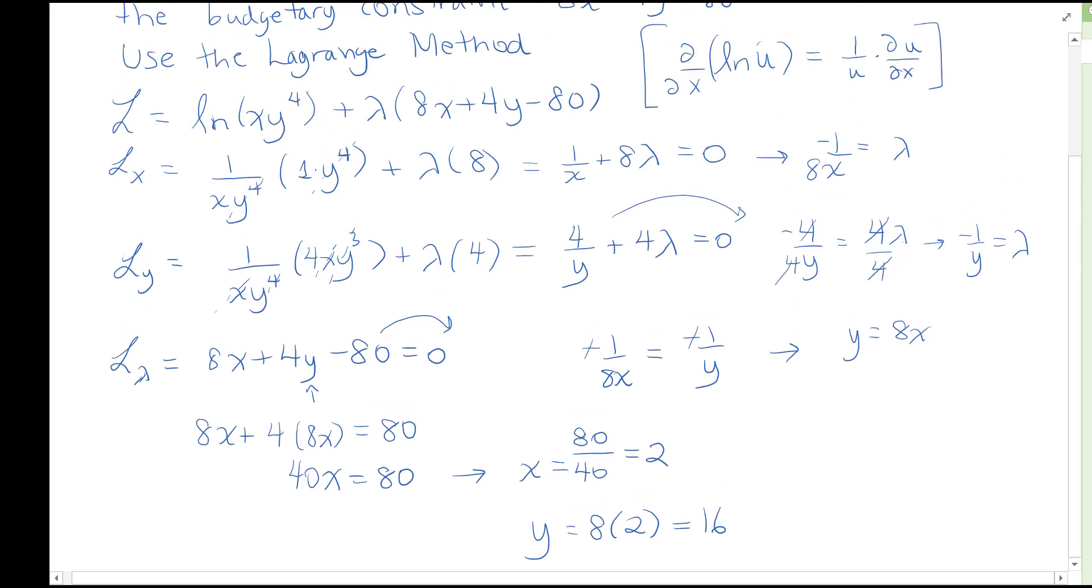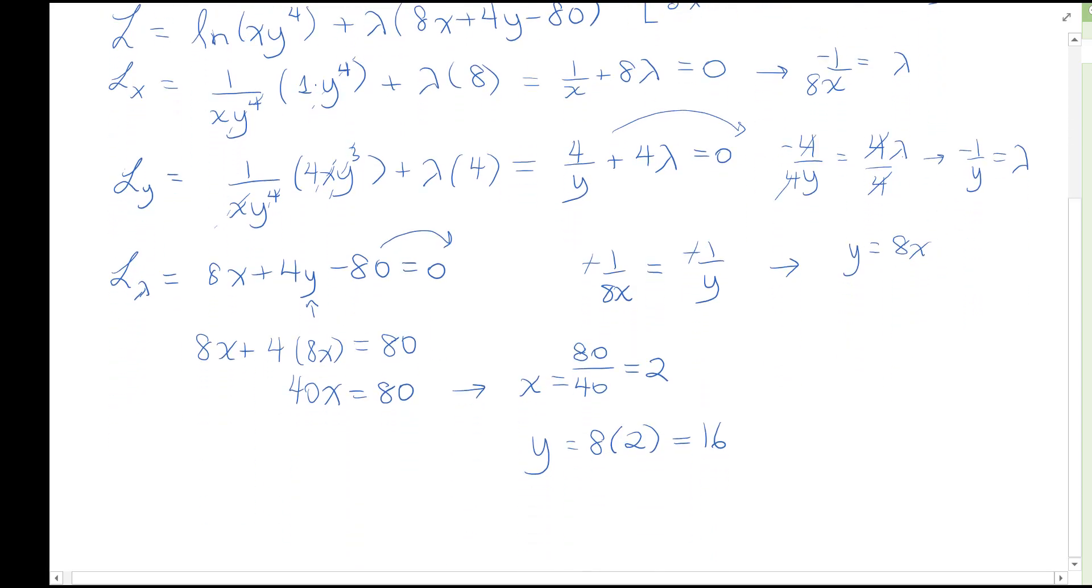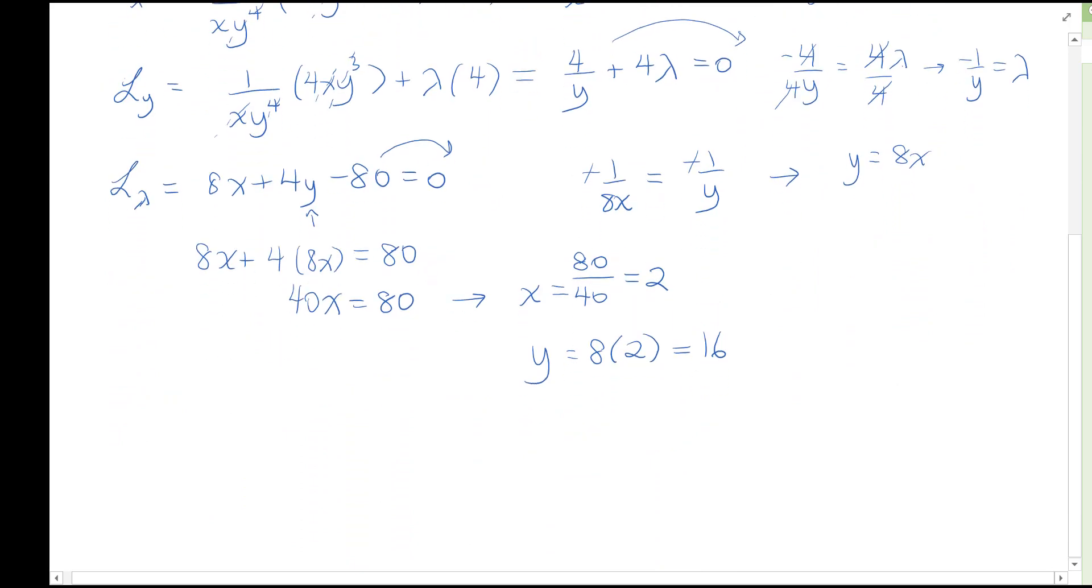We have now solved a Lagrange multiplier method problem with a logarithmic utility function. If we also wanted the value of the utility itself, we could go plug in this x and this y value into that original utility function, the log of x times y to the 4.